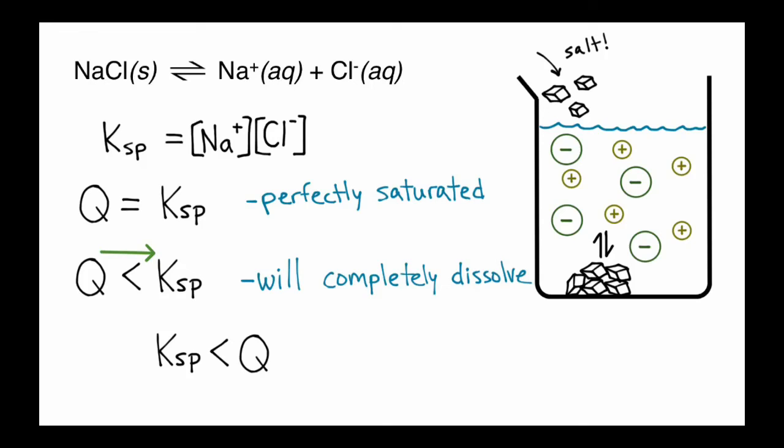And that will completely dissolve until we get to a situation where Q is equal to KSP. So if we keep adding more sodium chloride, eventually Q will equal KSP. If we add even more, we'll get to a point where Q is greater than KSP. And if that's the case, if Q is greater than KSP, well, this reaction is going to proceed toward the reactants. In other words, some of the aqueous sodium and chloride is going to go back to solid sodium chloride. And so we're going to precipitate out some sodium chloride. And again, that's if the Q is greater than KSP.